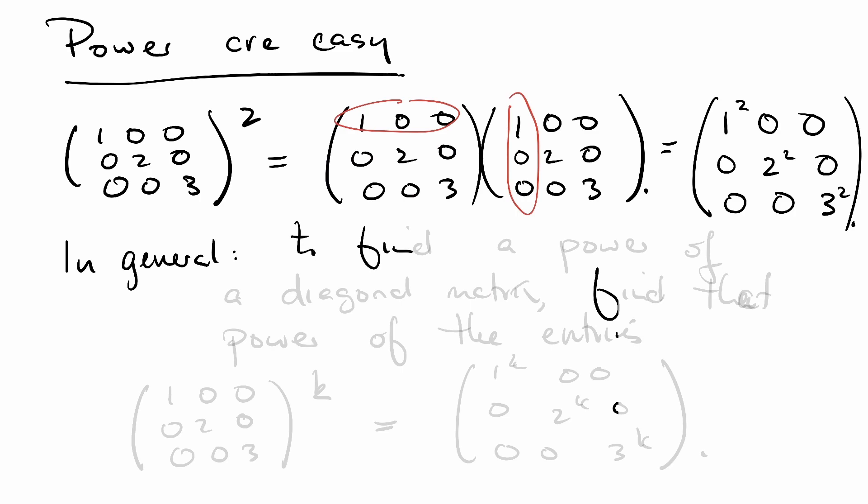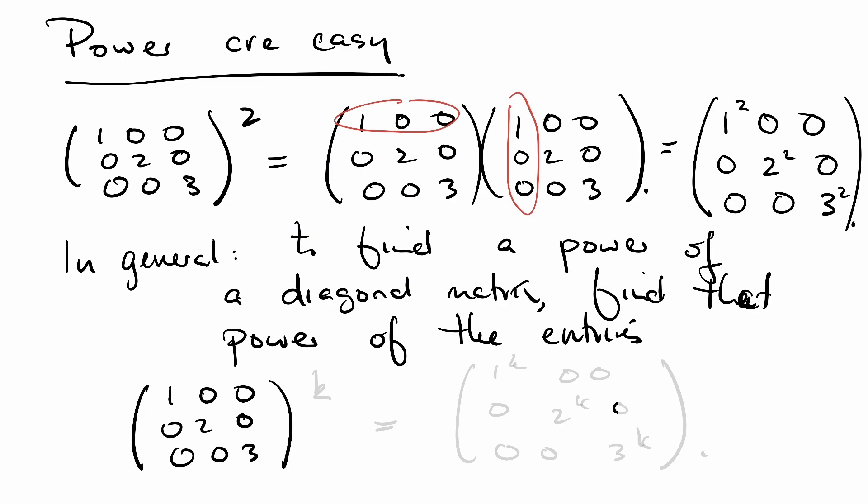In general, to find a power of a diagonal matrix, you find that power of the entries. So for example, 1, 0, 0, 0, 2, 0, 0, 0, 3 to any kth power is going to be 1 to the k, 2 to the k, and finally 3 to the k down here. Not only are powers easy, but inverses are easy.